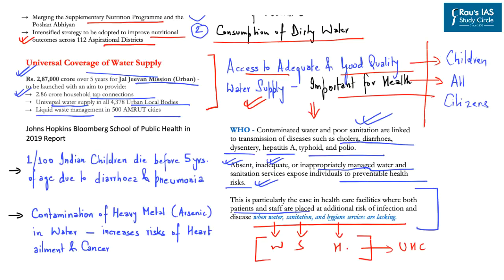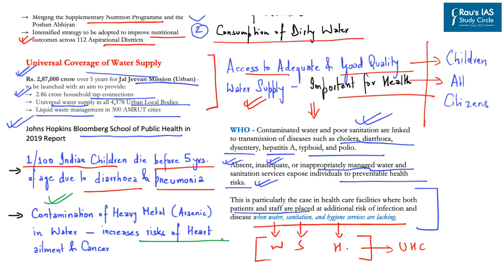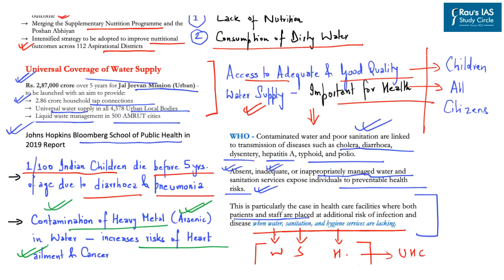The newspaper highlights the John Hopkins Bloomberg School of Public Health report of 2019, which states that one out of every hundred Indian children dies before five years of age due to diarrhea and pneumonia. Children are also susceptible to increased risk of heart ailment and cancer due to contamination of water with heavy metals such as arsenic. Clean water, good sanitation and proper hygiene are therefore important for universal health coverage and reducing child mortality.